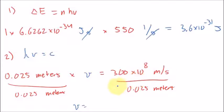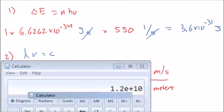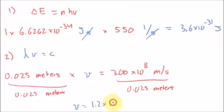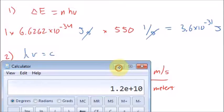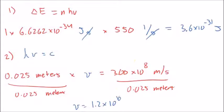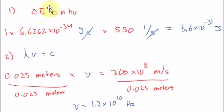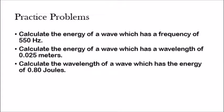By the way, I typically use 3.00 for the speed of light — it's just a habit. I don't use 2.998. But if your teacher wants you to use a more specific value, 2.998, make sure you do that. So our answer is 1.2 times 10 to the 10th hertz. Now using that information, we can use our equation and calculate the energy of the wave, which is what we're looking for.